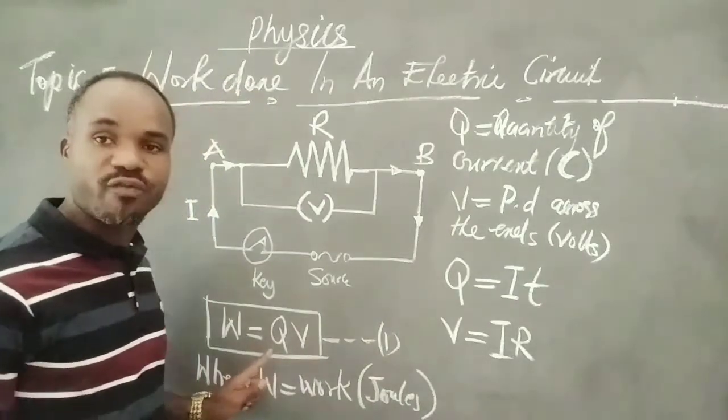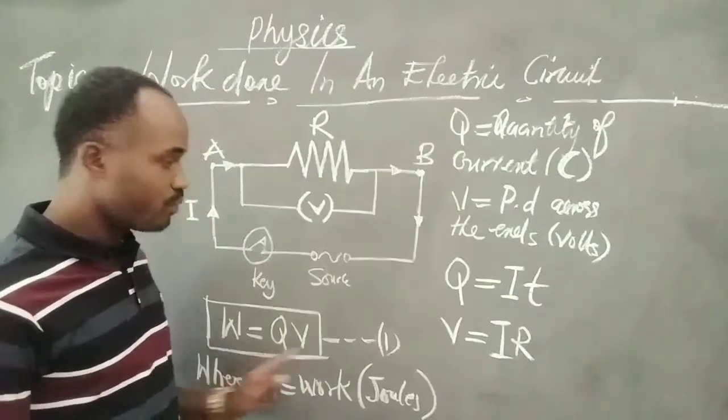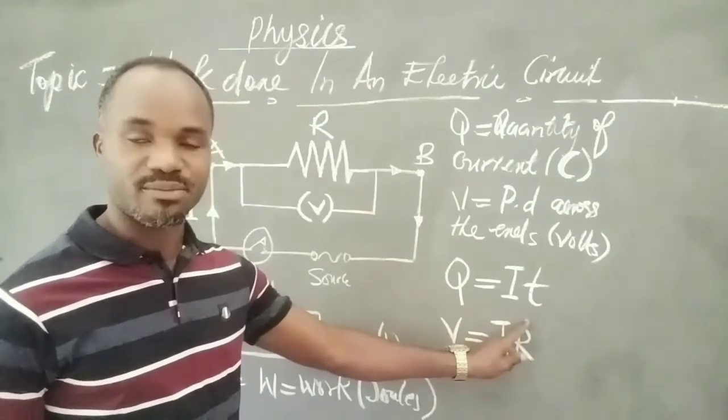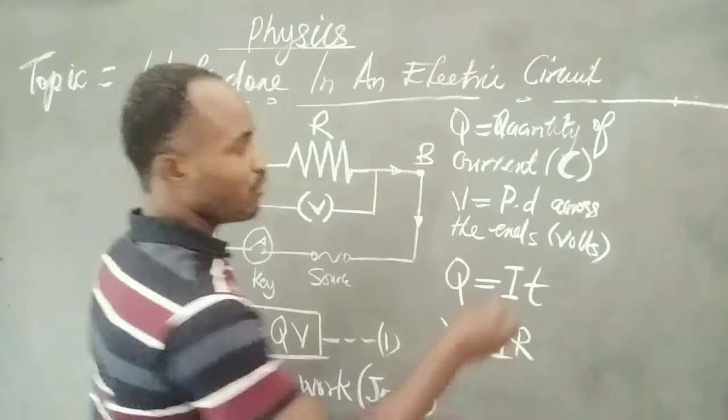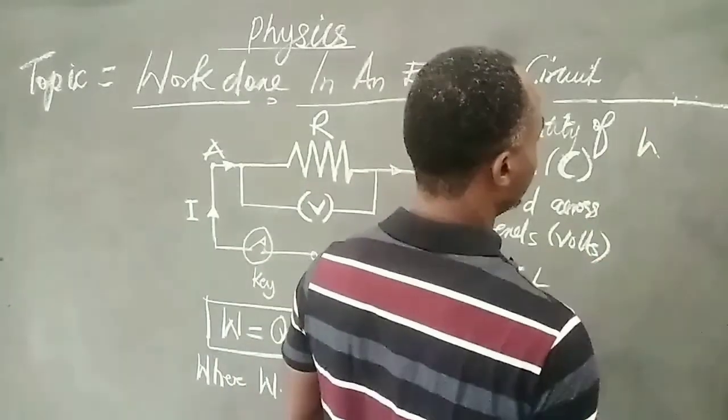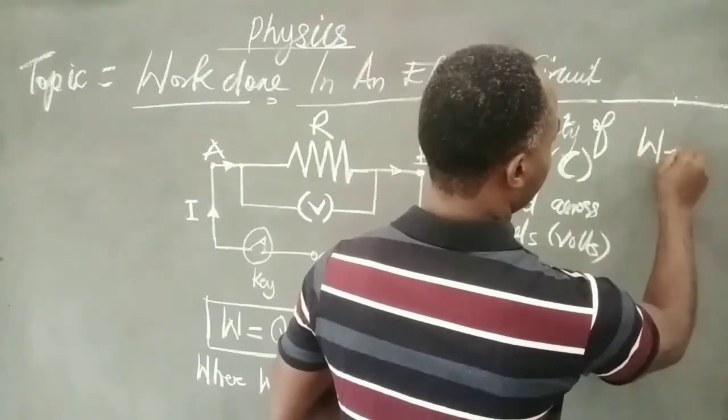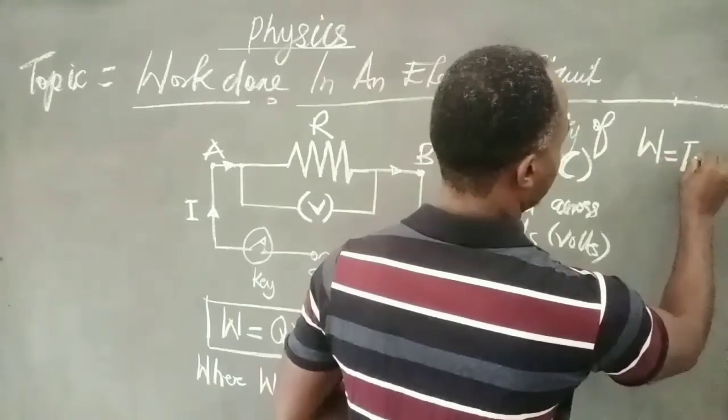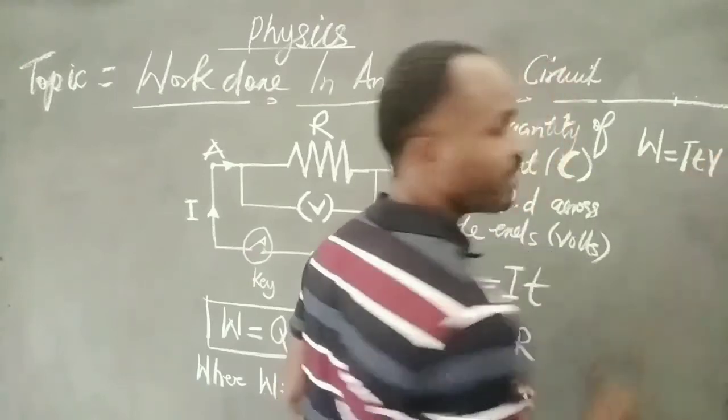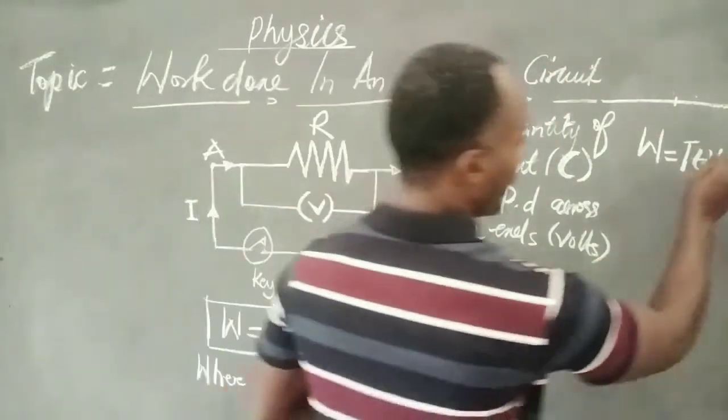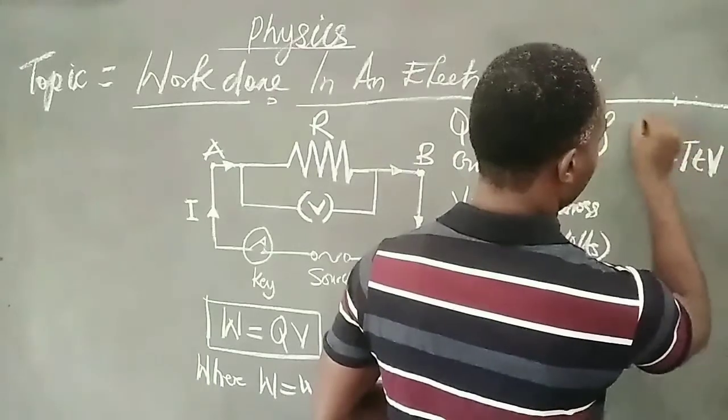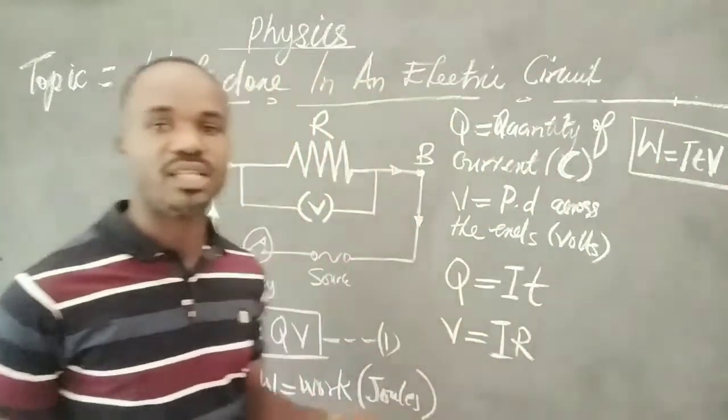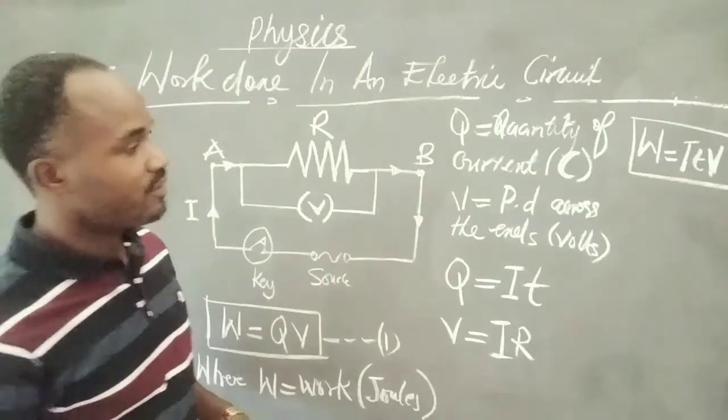So if we substitute the values of Q, that is I and T, that is current and time, the product of current and time, we have W is equal to I, T and V. This is V. Another relation, we call that relation T. This is relation T.